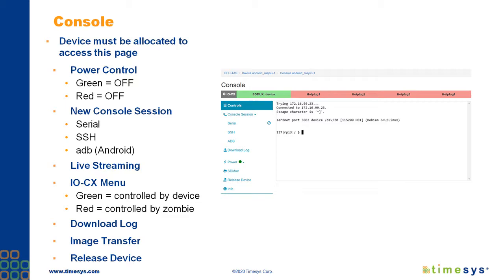You can also take a look at the live video streaming — so if there is a screen connected to a device, you can see what's changing on a device. You can also access the IOCX menu, which allows you to hot plug devices remotely. In addition, you'll have access to logs, and you'll be able to transfer a release image to an SD card remotely.